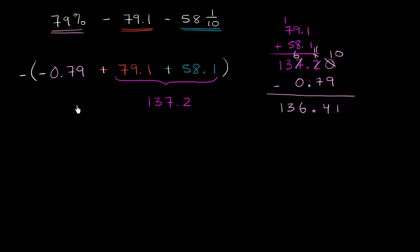So when I computed all of this inside the parentheses, outside of the parentheses I still have the negative sign, but when I computed all of this inside the parentheses I got 136.41, and then we can't forget about the negative sign out here. So this whole thing computes to negative 136.41.